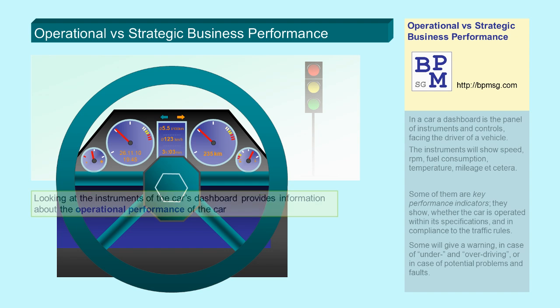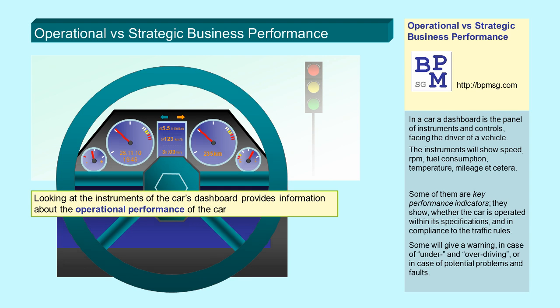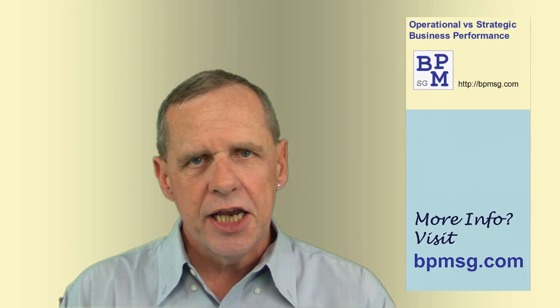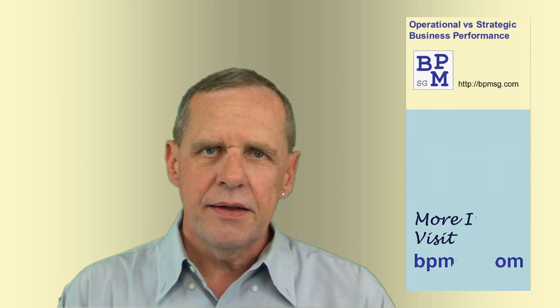So, looking at the instruments of the car's dashboard provides information about the operational performance of the car. But does it give you any information about your planned destination or the time when you want to arrive there? Does it tell you how much fuel you need or whether you can do the trip in one or two days?